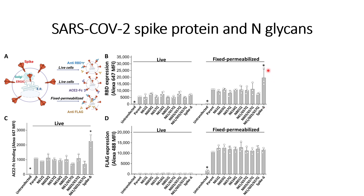For spike-delta, the cleavage site is removed, and because of that the expression of the S1 side seems to be greater. Somewhat, this cleavage site prevents the expression of the spike protein, and in the absence of that cleavage site the expression of spike-delta increases to a great amount compared to the other knockouts and also compared to the parent.